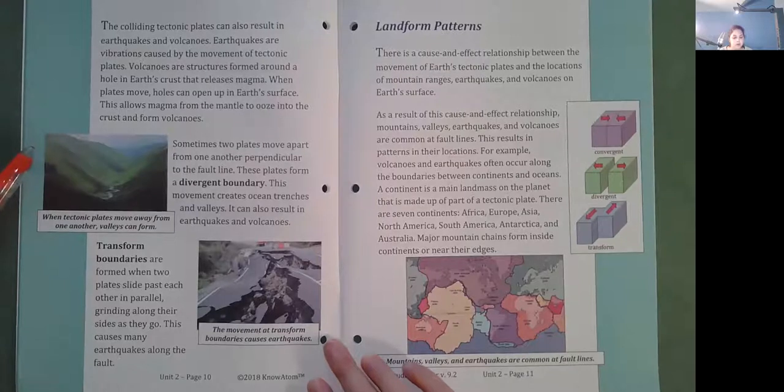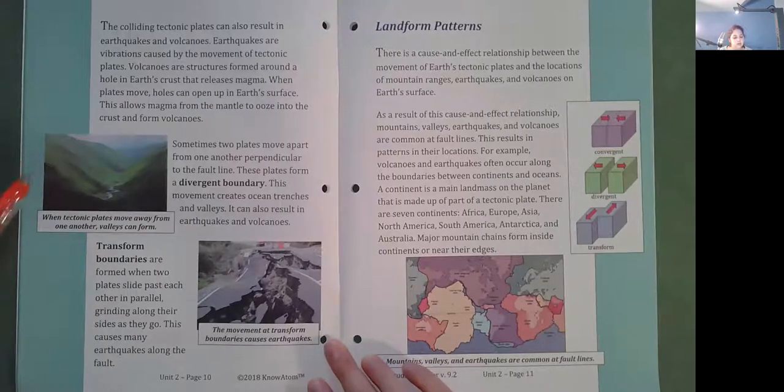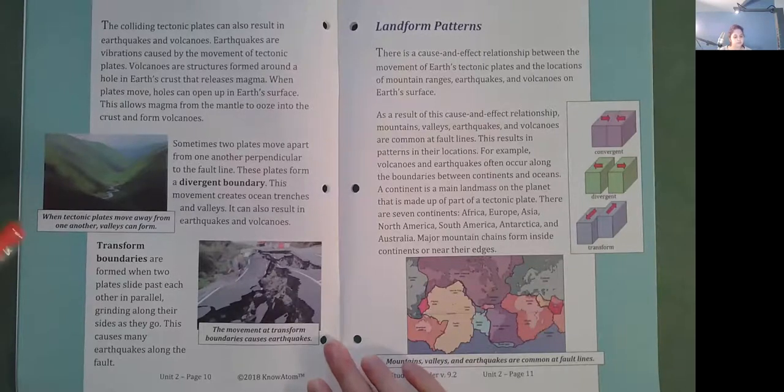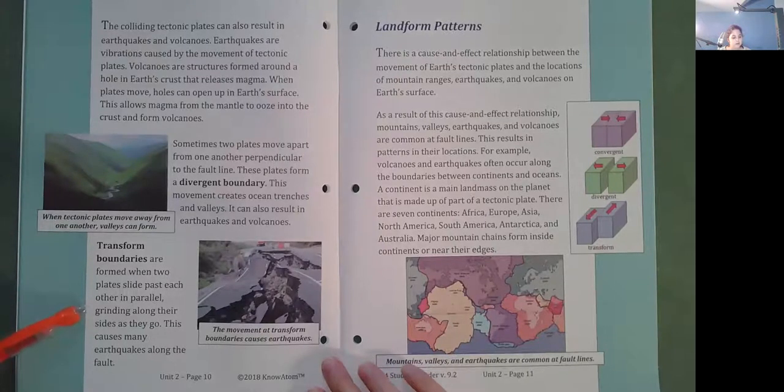Sometimes two plates move apart from one another perpendicular to the fault line. These plates form a divergent boundary. This movement creates ocean trenches and valleys. It can also result in earthquakes and volcanoes. Transform boundaries are formed when two plates slide past each other in parallel, grinding along their sides as they go. This causes many earthquakes along the fault.